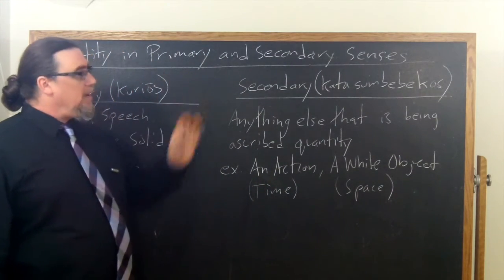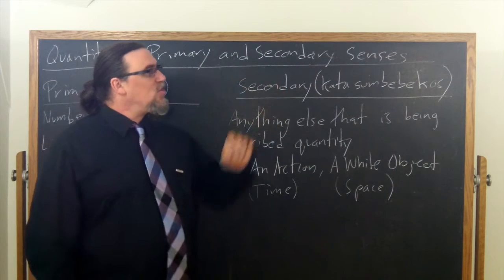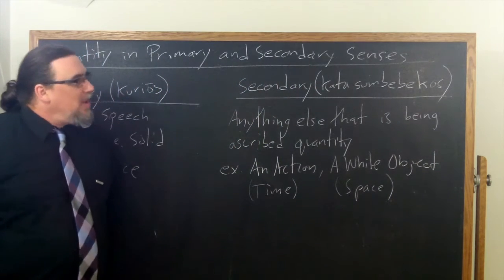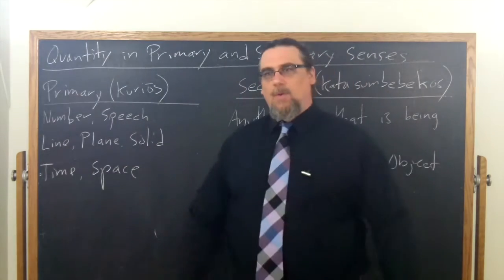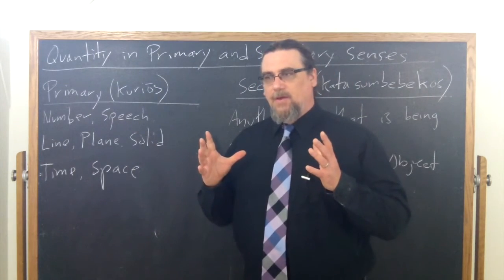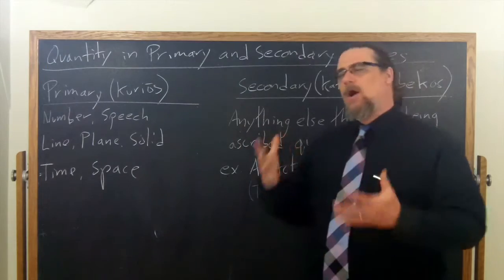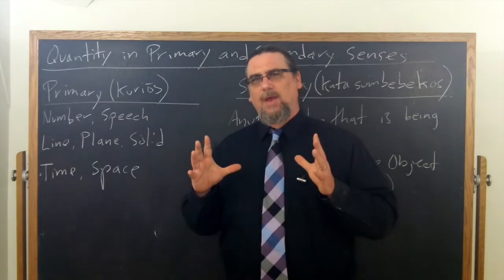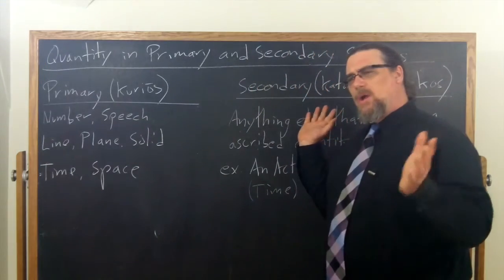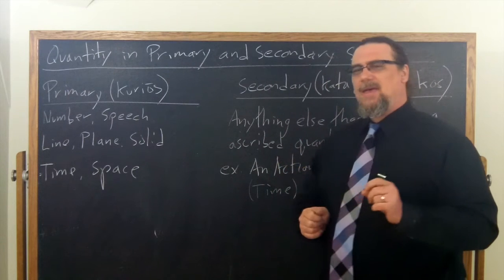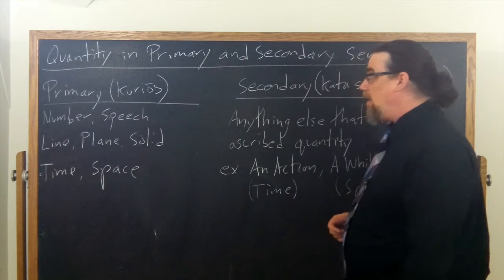And he says, anything else that's being ascribed quantity would fit into this other group of the kata sumbebekos. And we can translate that as secondary, or we can translate that as derivative. Strictly speaking, what we're talking about there is what is accidental. Something is essentially quantity. Something else happens to be called quantity. Remember, categories are ways of predicating something of something else.